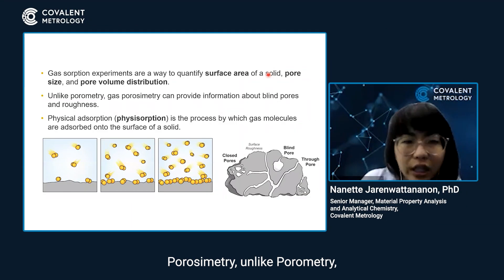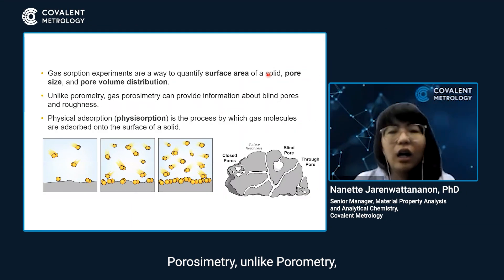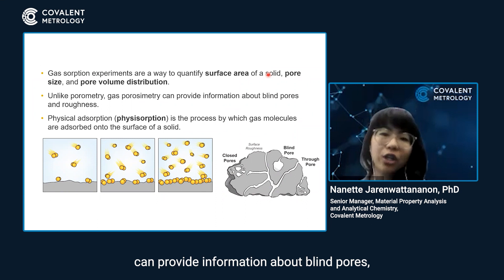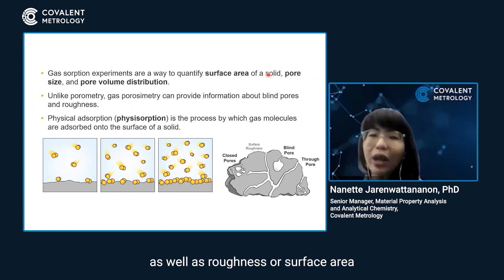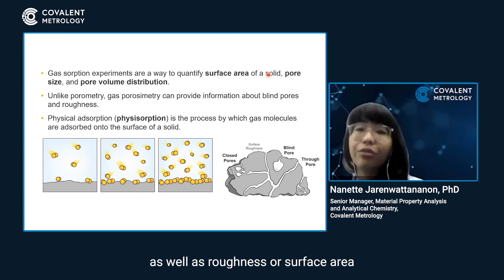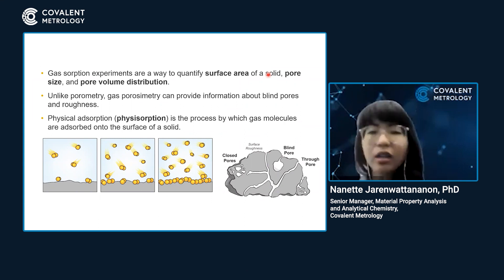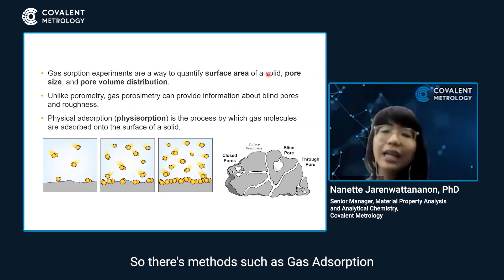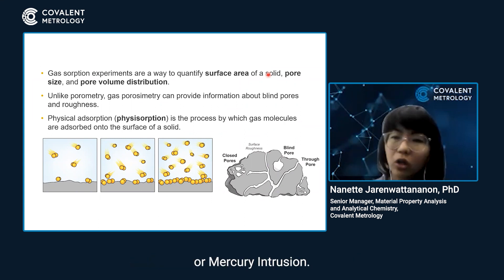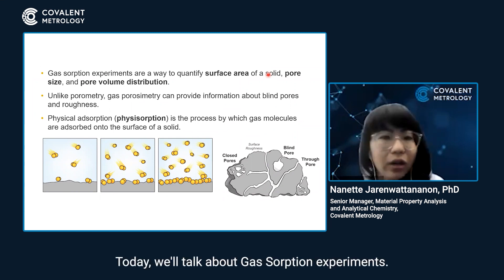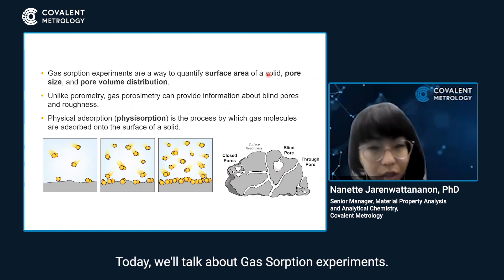Pore asymmetry, unlike barometry, can provide information about fine pores as well as roughness or surface area of a material. There are methods such as gas adsorption or mercury intrusion. Today we'll talk about gas sorption experiments.